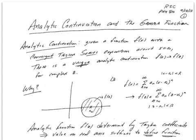Hi, class. I wanted to give you some more detail about analytic continuation, and I wanted to use an example involving the gamma function. Let me remind you that analytic continuation is the statement that given any function f of x of a real variable x that has a convergent Taylor series expansion about some point x equals x0, there is a unique analytic continuation — that is, we can go from f as a real function of x to generalize it to f as a function of z for complex z.